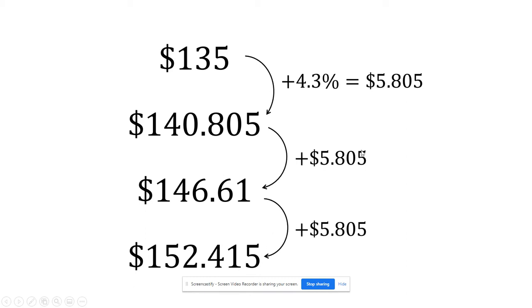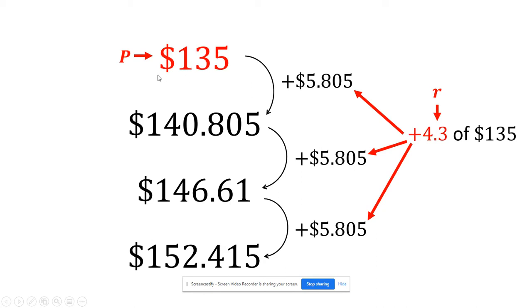Now, what's interesting to see here is that all three years, we're adding the same amount because we're always basing it off of 4.3% of 135. So keeping in mind that this is P and this is R, what we're really doing here is we're finding P times R and adding that each time.